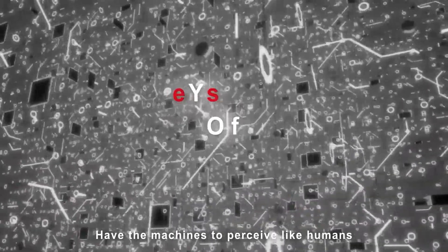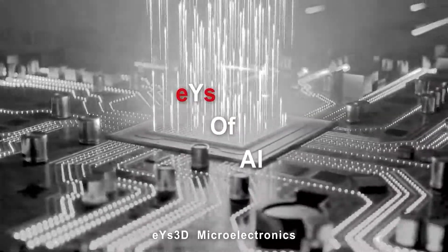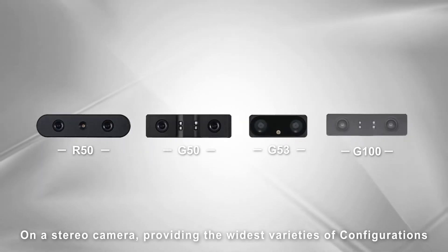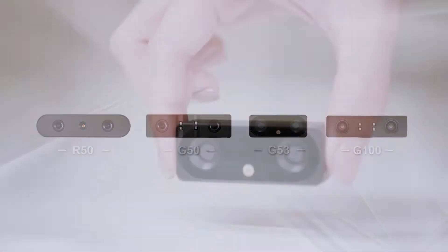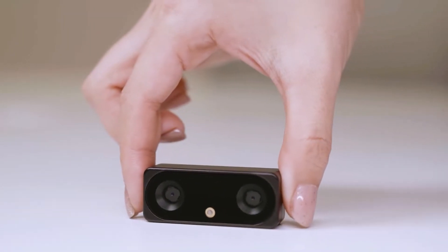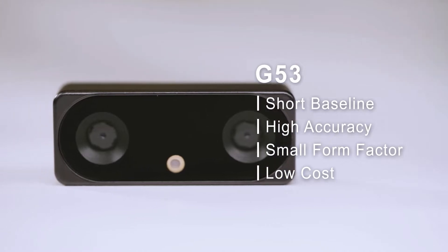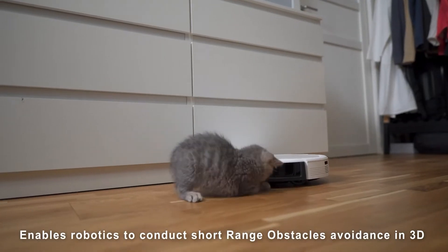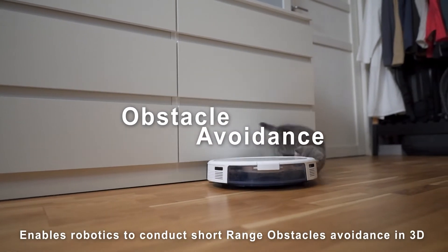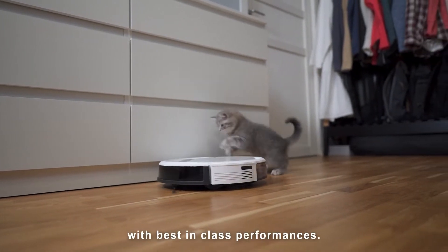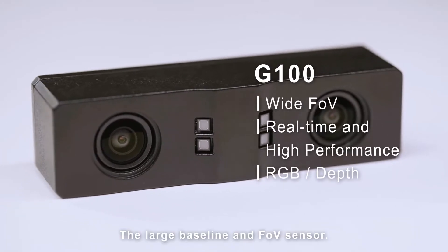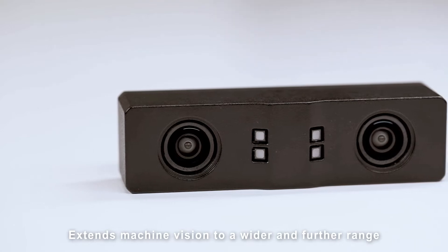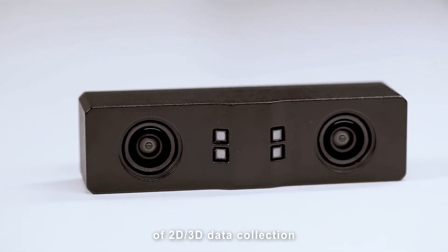3D microelectronics on a stereo camera providing the widest variety of configurations. The small form factor 3D sensor enables robotics to conduct short-range obstacle avoidance in 3D with best-in-class performance. The large baseline and FOV sensor extends machine vision to a wider and further range of 2D and 3D data collection.